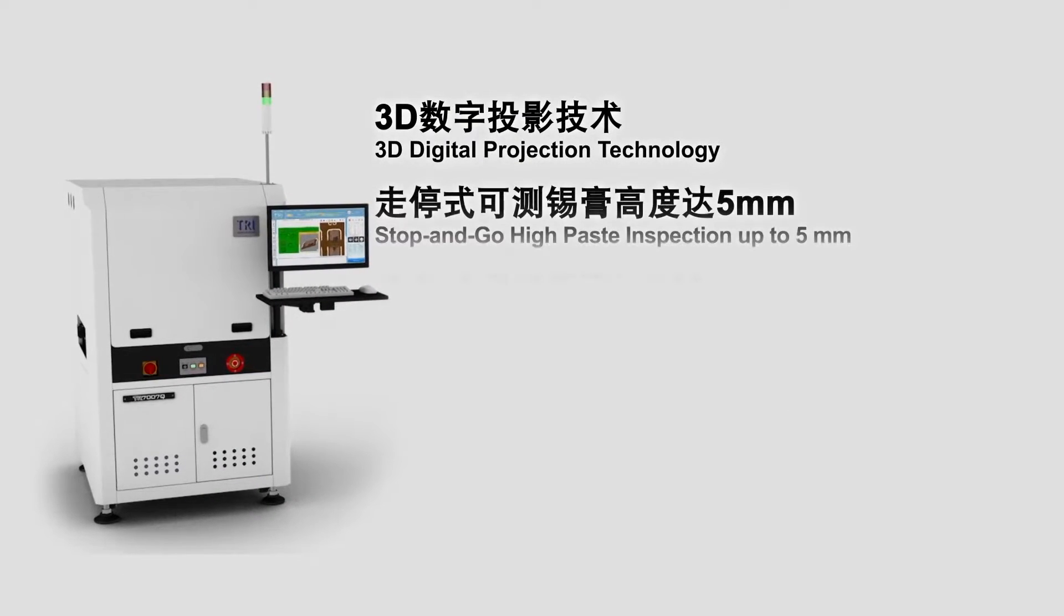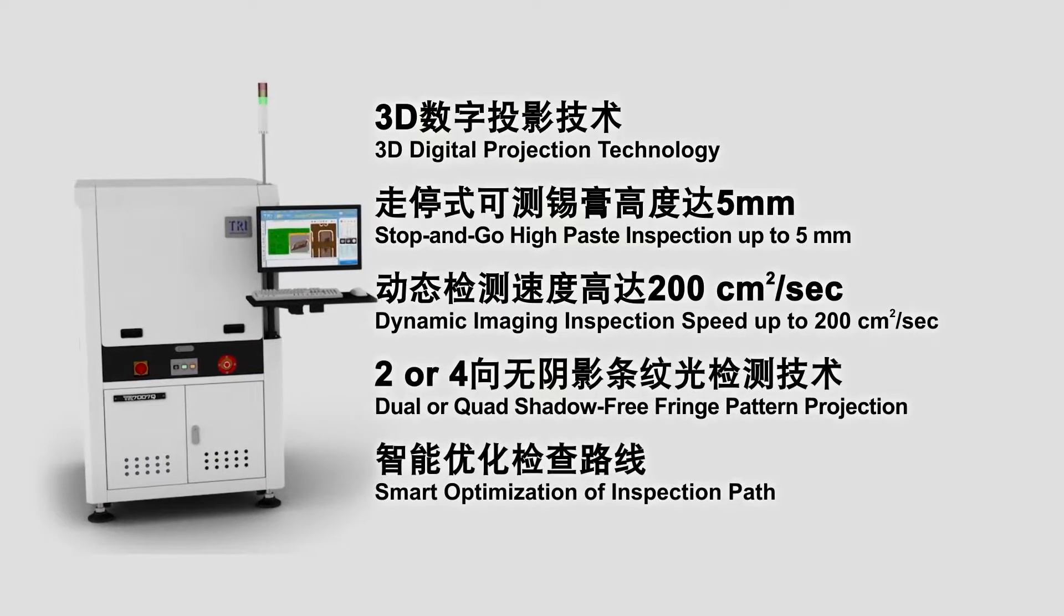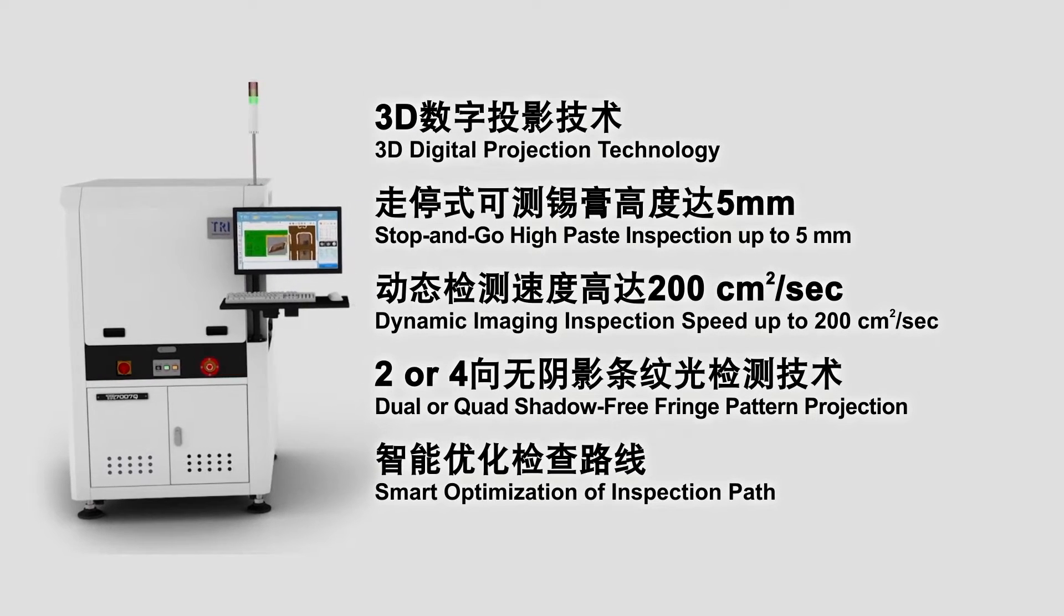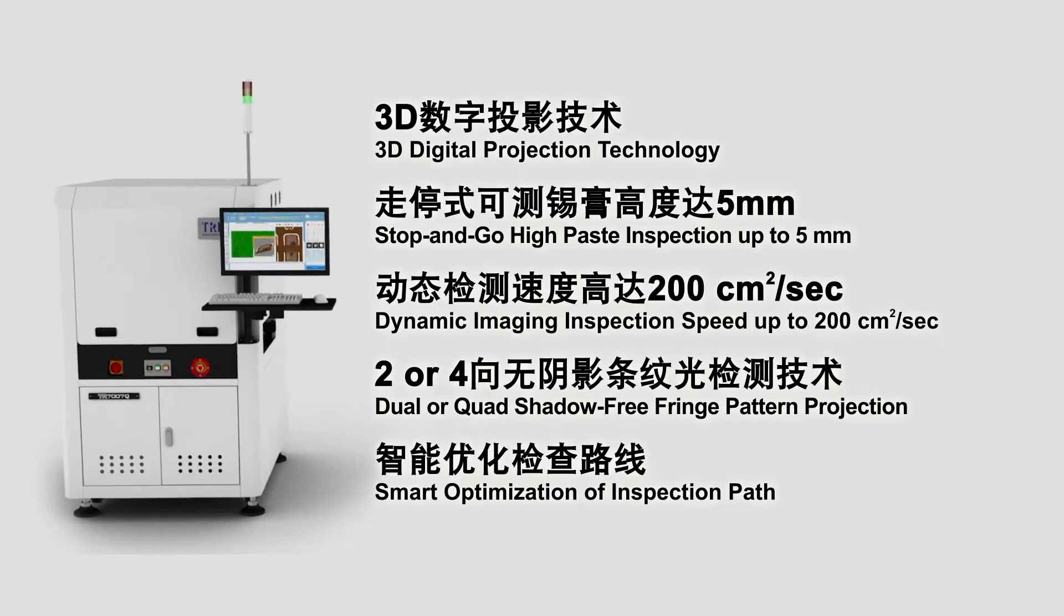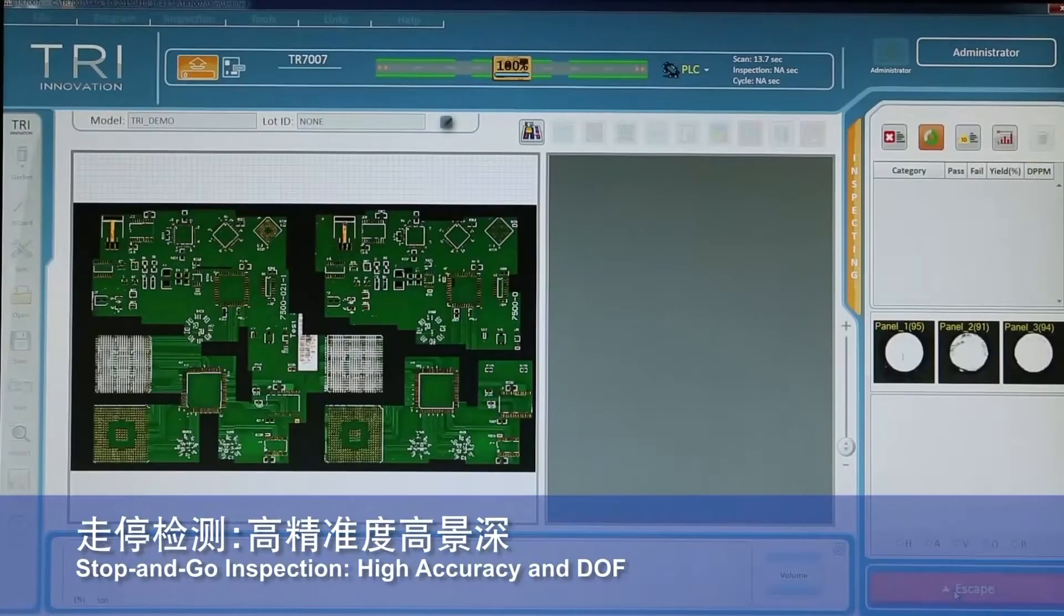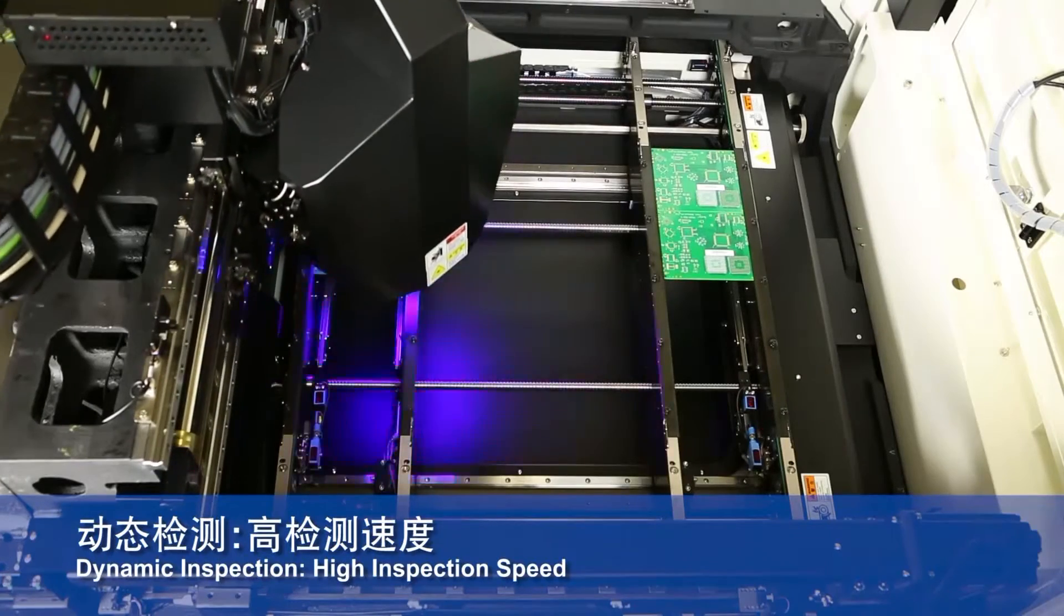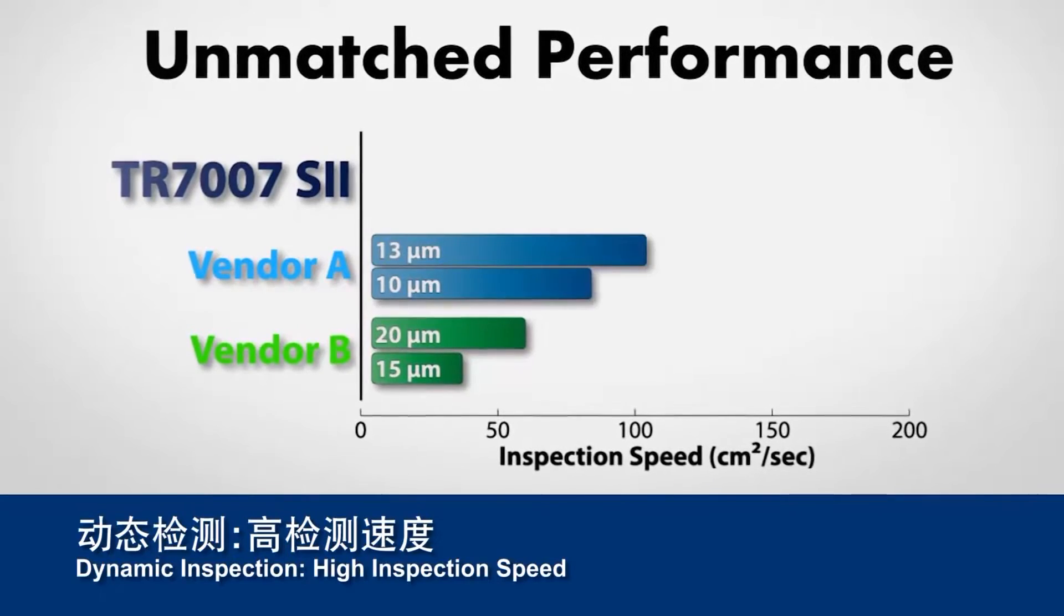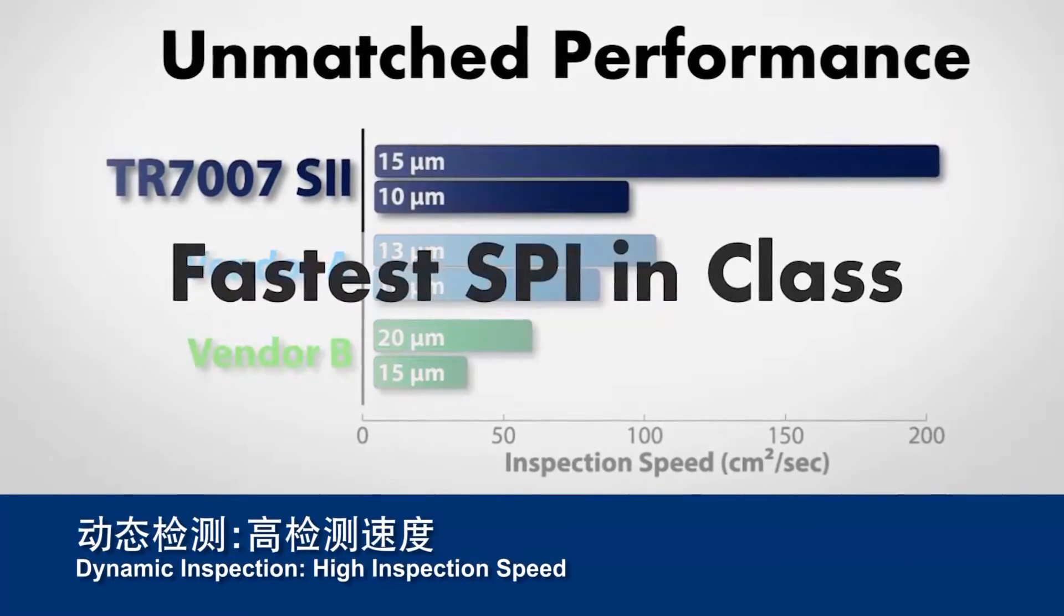TRI offers multiple SPI solutions based on the latest 3D projection technologies that include stop and go inspection and dynamic imaging. Stop and go offers better GR&R and higher solder paste inspection, while the latter allows up to 200 square centimeters per second inspection rate, making it the fastest SPI solution on the market.